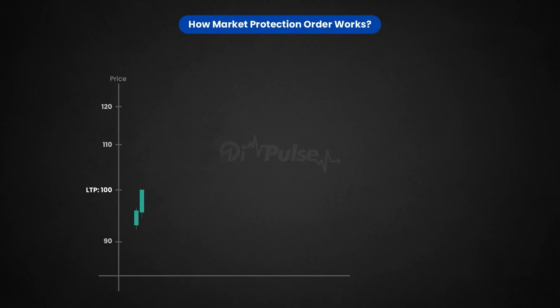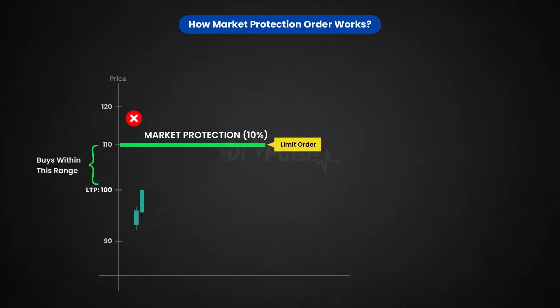For example, if you're placing an order at 10% market protection and the LTP is 100, we will place a market protection order for 110 as a limit order. It will execute near the LTP open position but will not execute above 110. If a free trade comes in at 200 or 150, the order will still be pending at 110 only and will not execute.